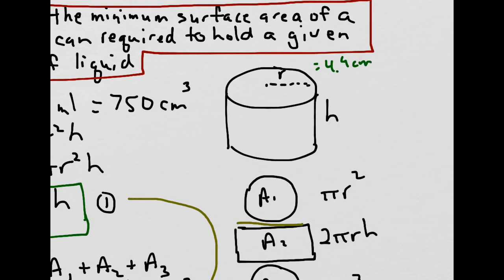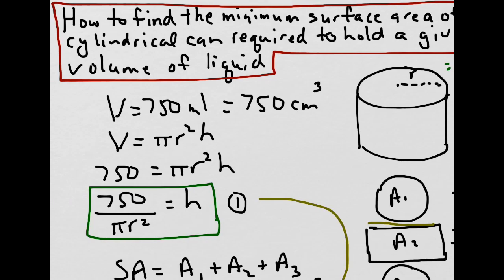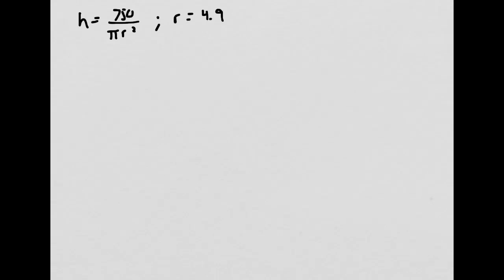Now how do we find the height? We know the relationship between height and radius from equation 1. Substituting our radius of 4.9 centimeters into h equals 750 divided by pi r squared, we get h equals 750 divided by pi times 4.9 squared. Working this out, we end up with a height of 9.8 centimeters.